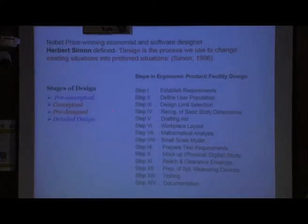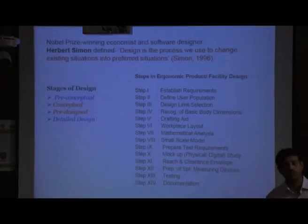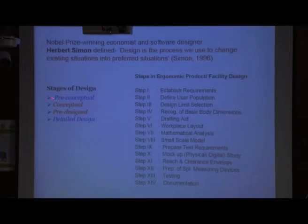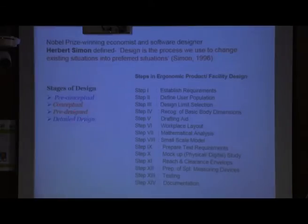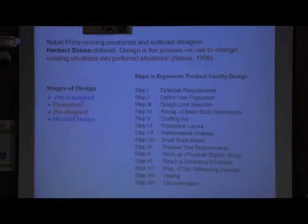In the design process, there are four phases: pre-conceptual, conceptual, pre-design, and finally detailed design. In the pre-conceptual phase, we need to gather information — user study or ethnographic study, field observation or market survey, design limit selection. We need to know the use context, targeted users, physical dimensions of the product, material cost, manufacturability, and sustainability. Only then can we move to the conceptual phase.